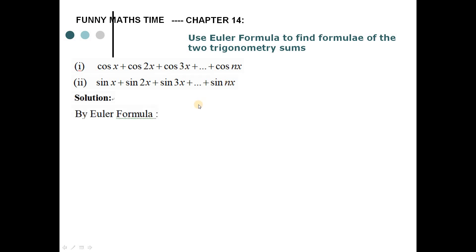First, by Euler's formula, we have e to the power i·kx. Here kx is the compound angle, k is a positive integer, and x is any real number, which is equal to cos kx plus i·sin kx.